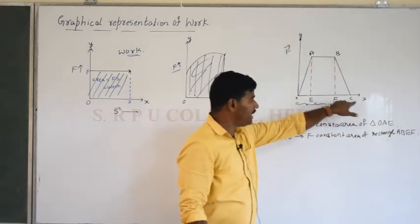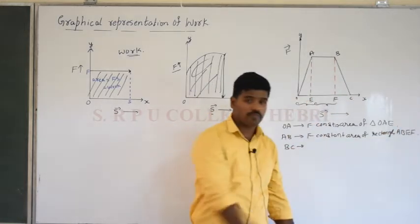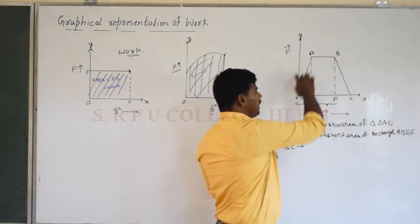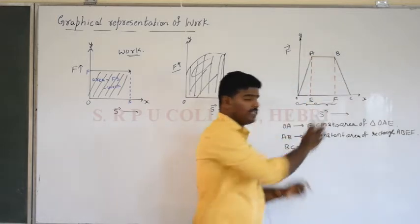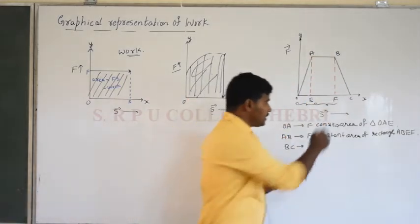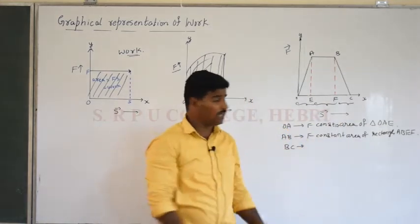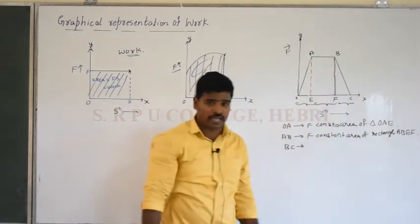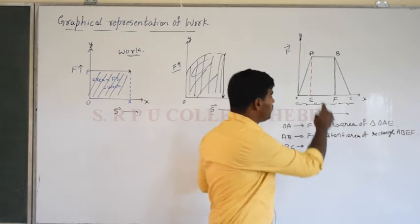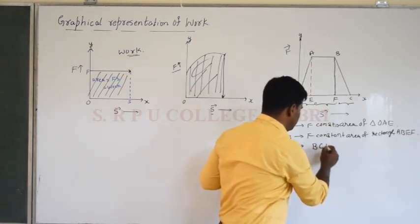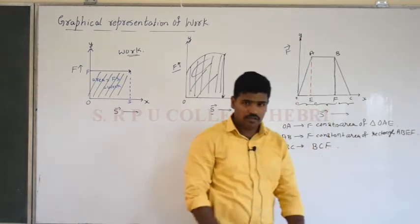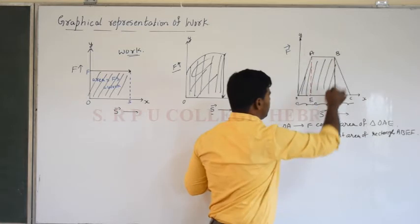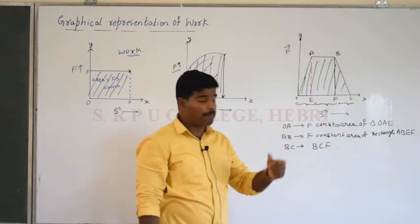From point B to C, the force is decreasing. The displacement is from F to C. This forms a triangle BCF. Therefore the area under this curve, representing work done, is the area of triangle BCF.